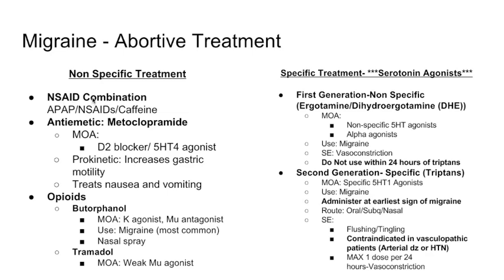The first thing we can use is an NSAIDs combination. You can use acetaminophen, NSAIDs like ibuprofen or naproxen, and caffeine. These medications are usually combined and you'll find them over the counter. These medications target the nociceptive receptors.